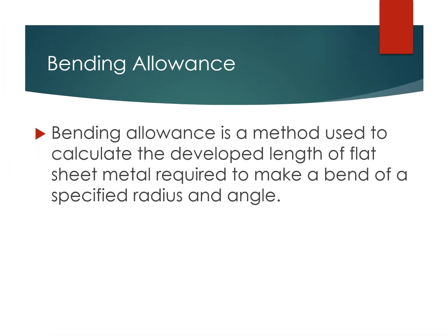Bending allowance is the method used to calculate the developed length of flat sheet metal required to make a bend of a specified radius and angle. It is an allowance given to the sheet metal part, and it is based on the different materials of the sheet metal — that is what bending allowance means: how much we allow for bending of those parts.